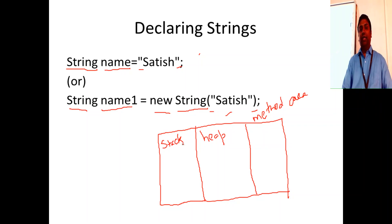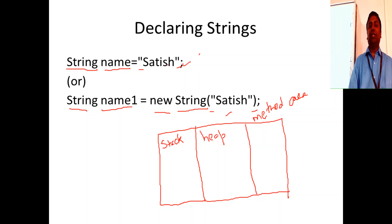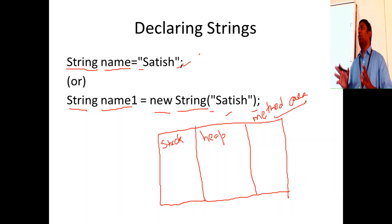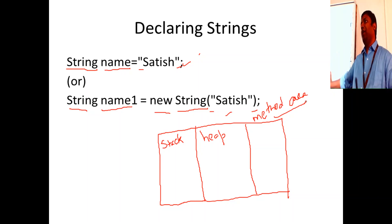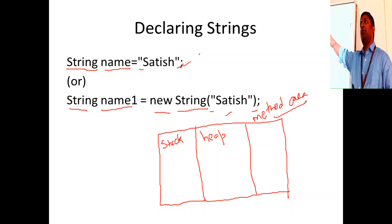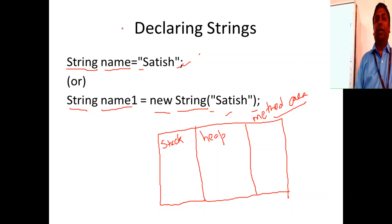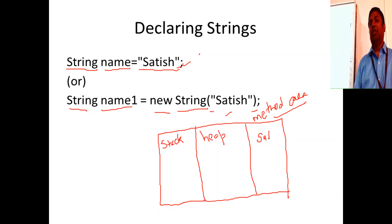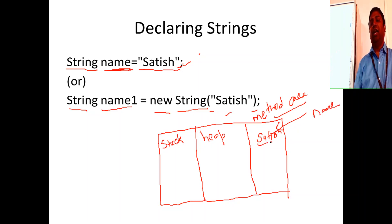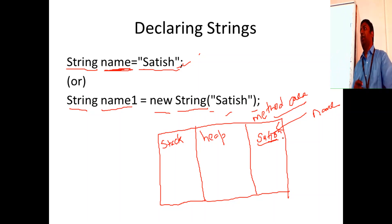When you declare a string like `String name = "Satish"`, this allocation goes to the method area. The method area is where method data for classes and objects is stored, and it also has a runtime constant pool where all constants are stored. "Satish" is a string literal, so it gets allocated in the runtime constant pool inside the method area, and the variable `name` holds the address of that location.